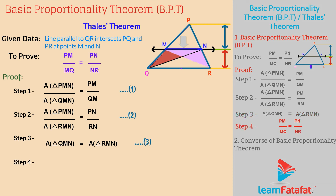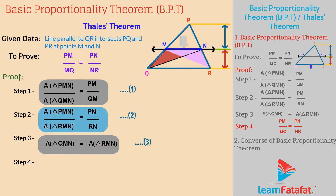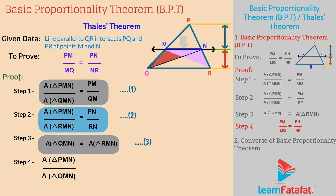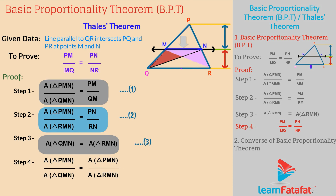Step 4: From equations 1, 2, and 3 — Area of triangle PMN divided by Area of triangle QMN is equal to Area of triangle PMN divided by Area of triangle RMN. That means PM divided by MQ is equal to PN divided by NR. Hence, the Basic Proportionality Theorem is proved.